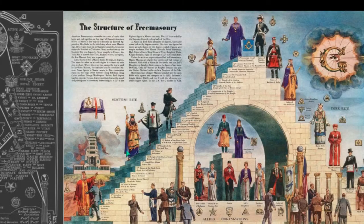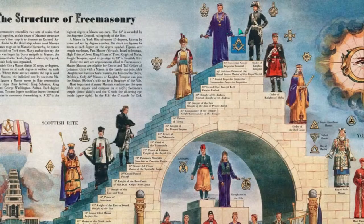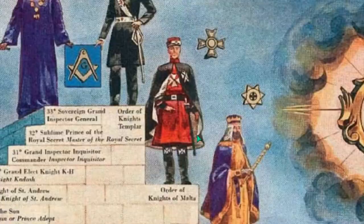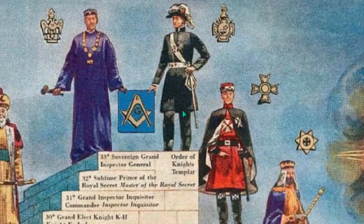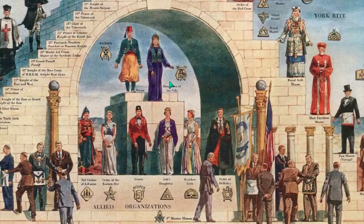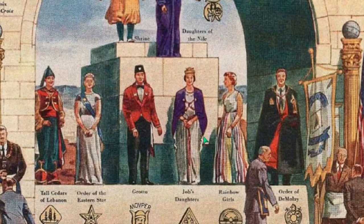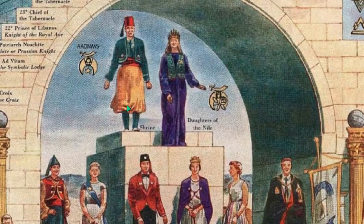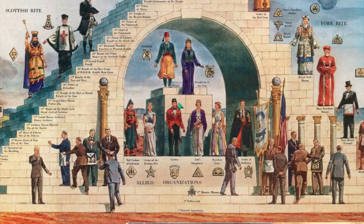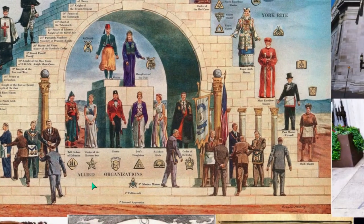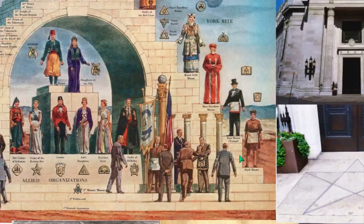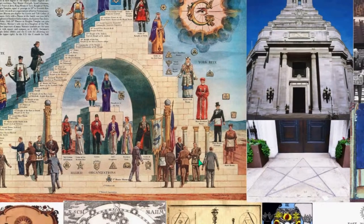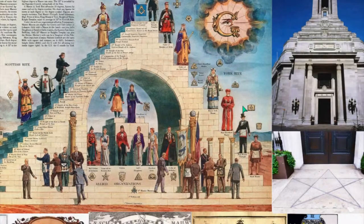Here again is the structure of Freemasonry — Scottish Rite, York Rite, and the steps at the top: Order of the Knights of Malta, Red Cross, Knights Templar. You also see co-masonry — women are involved. You see the Shriners and the Daughters of the Nile, so women can be in Freemasonry. The lower degrees are meant to be kept in the dark with regard to all of this. You advance in degree and the symbols become clearer and clearer.